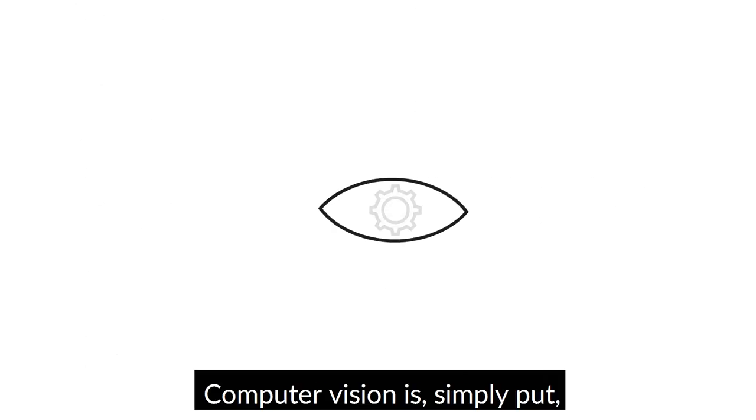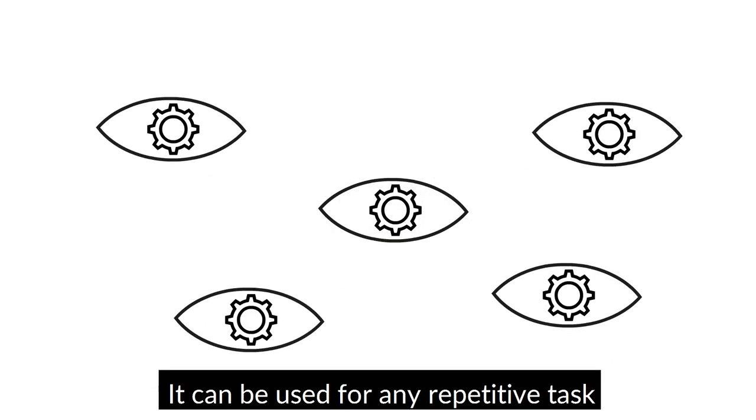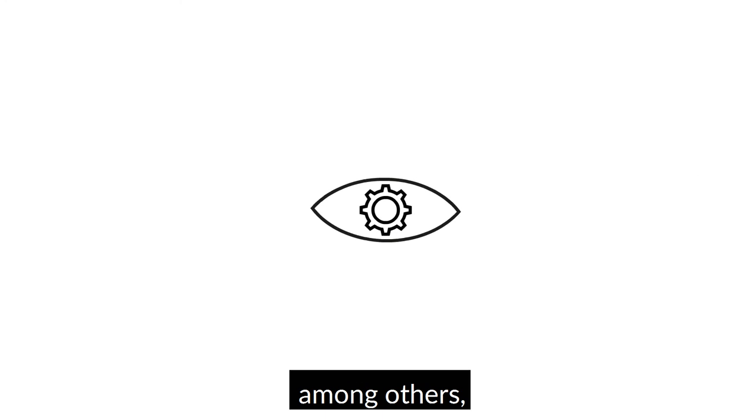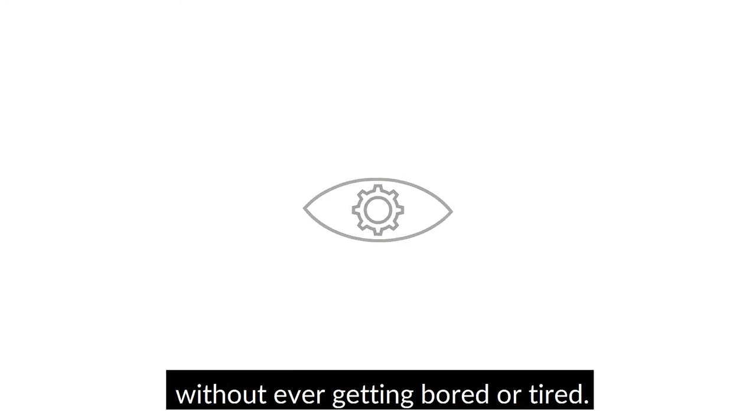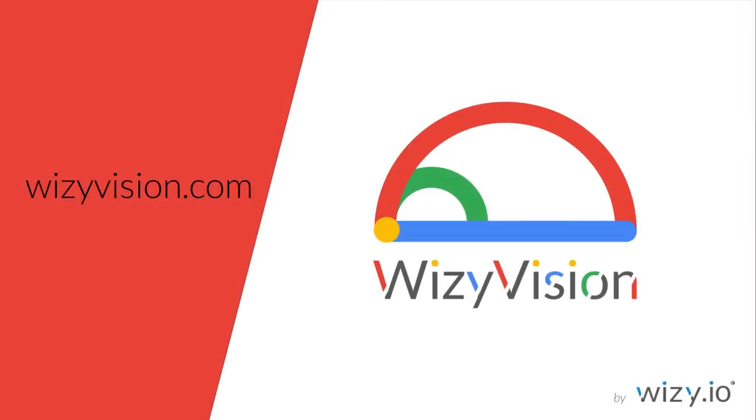Computer vision is, simply put, the automation of biological vision. It can be used for any repetitive task that biological vision is used for, such as driving and quality inspection among others, and accomplishes these with great efficiency, without ever getting bored or tired.